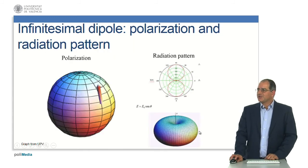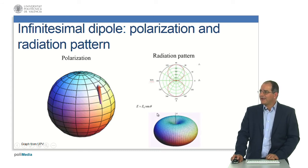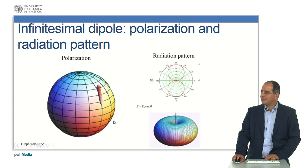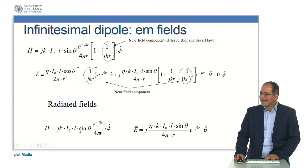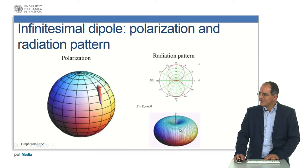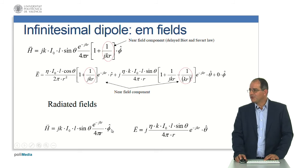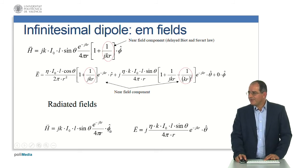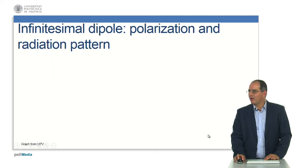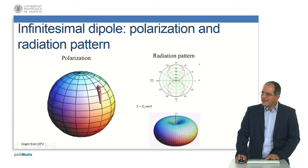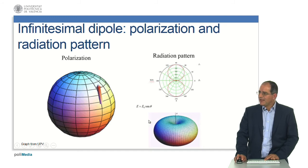It is also important to note that the magnetic field is directed towards the phi direction, and the electric field is directed towards the meridional theta direction. Making a sketch of the radiation pattern and polarization, the electric field has a sine-theta distribution — this is the radiation pattern. The polarization vector depends on only one dimension: phi for the magnetic field and theta for the electric field, giving linear polarization for this infinitesimal dipole.